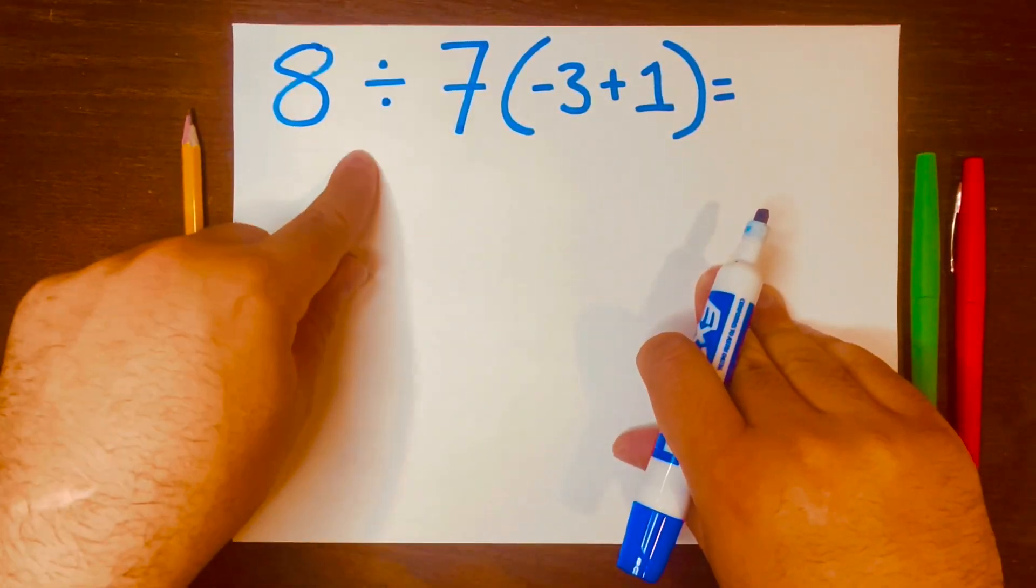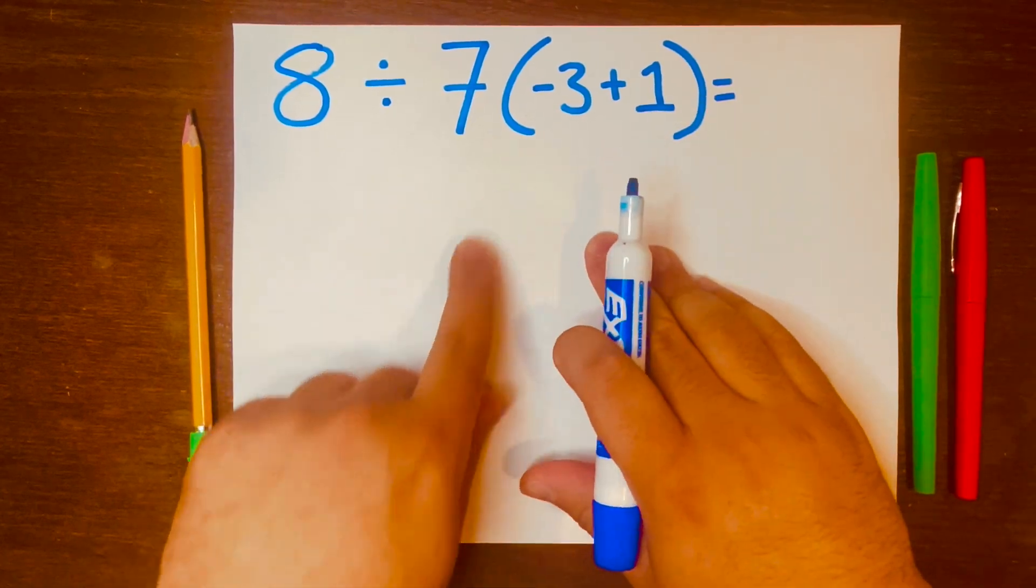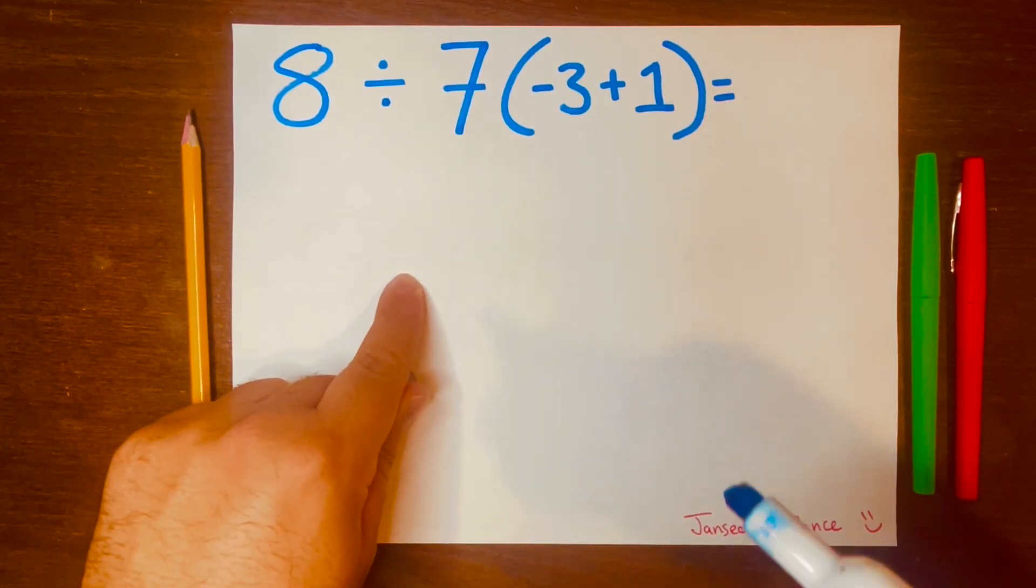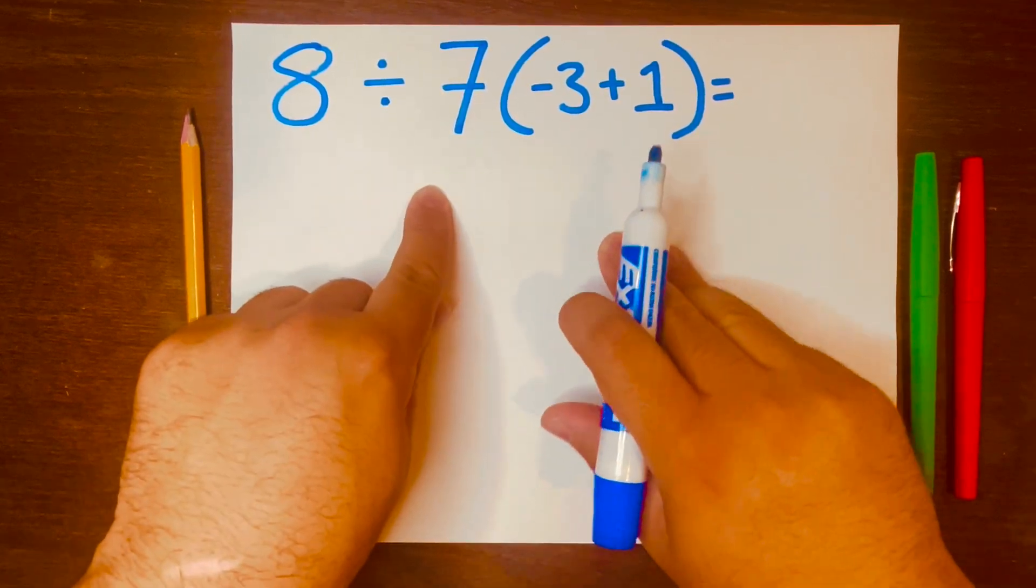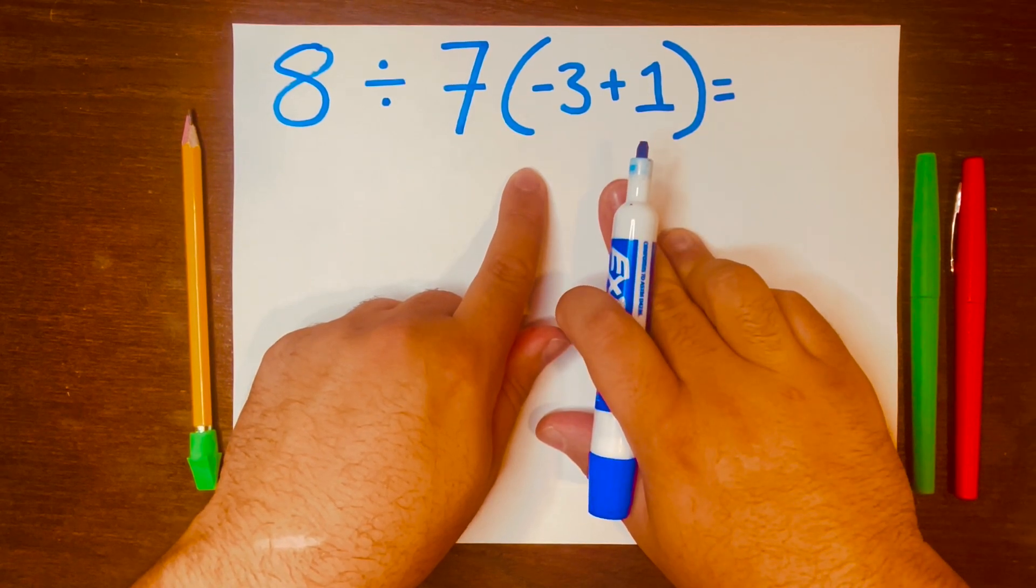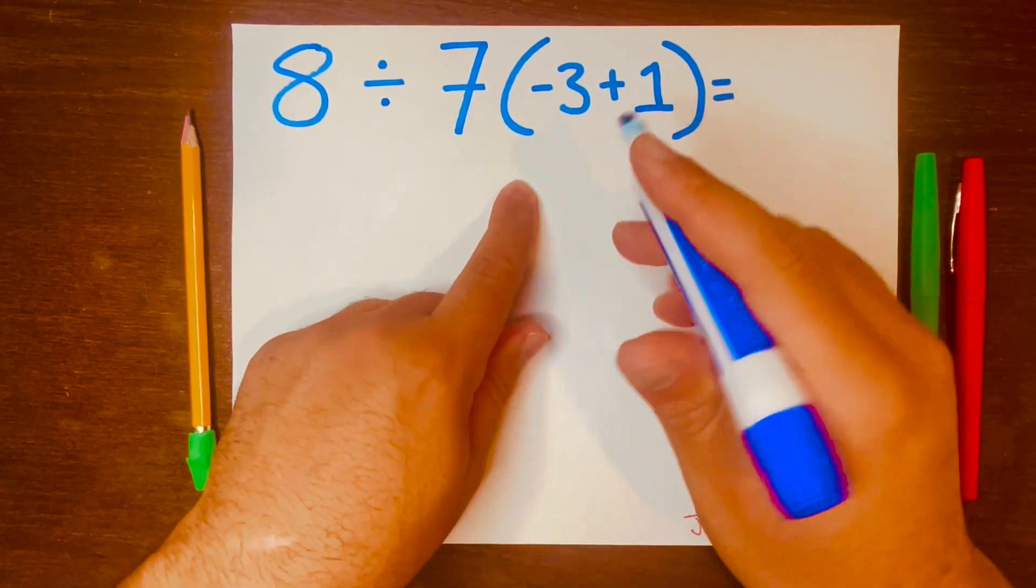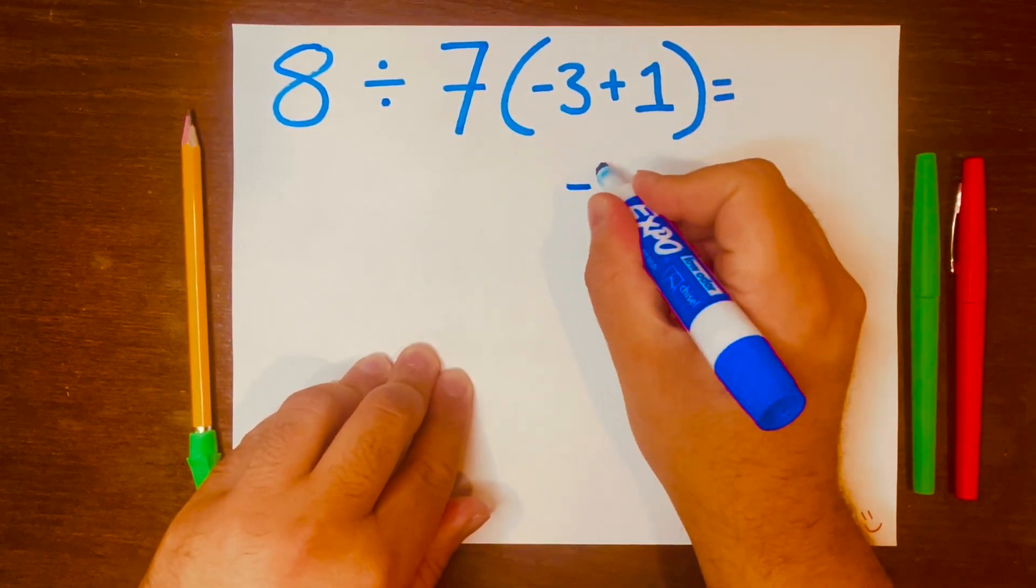Analyzing this problem, I know I'll be doing division, multiplication, and addition, so I think of PEMDAS, working from left to right. To start solving this problem, I will start with parentheses because it's the highest level of PEMDAS. Negative 3 plus 1 is negative 2, and I'll keep the parentheses.